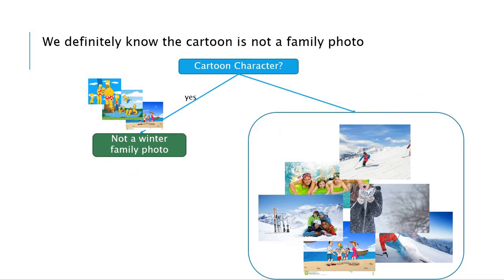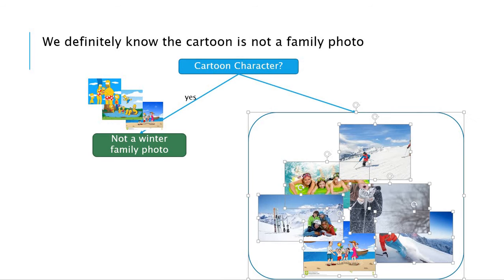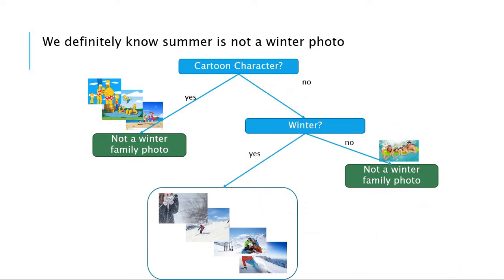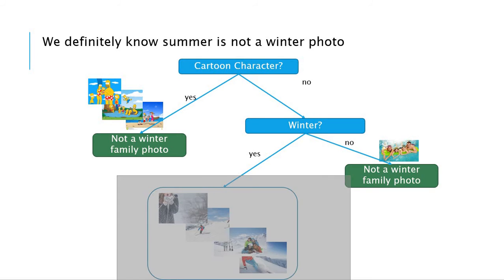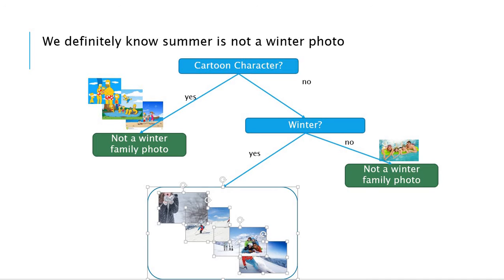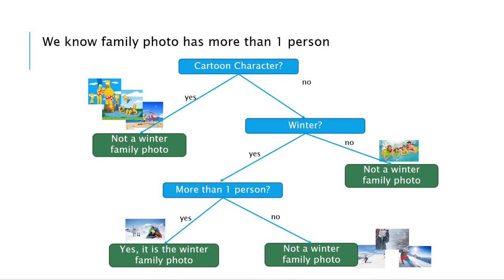We definitely know the cartoon is not a family photo. So we can split these pictures using the cartoon characters attribute, and we have the remaining here. We can split again using the winter attribute — if the picture is winter, that's what we want. And we can split again the remaining using the more than one person attribute. If the picture is just a single person, it's not a family photo. So a picture that is not a cartoon character, is winter, and has more than one person is a family winter photo.